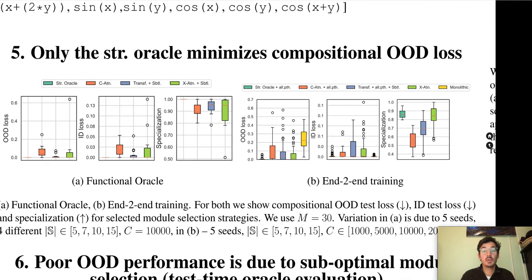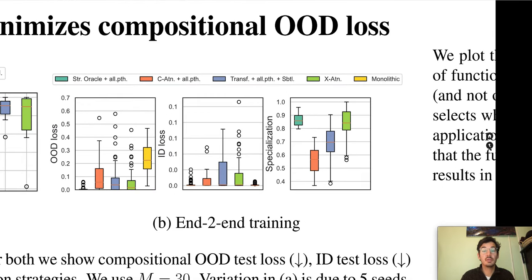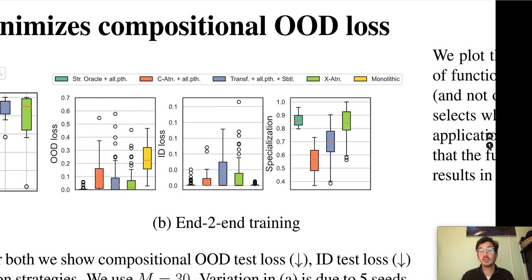Briefly, in our experiments we find that modular solutions reliably outperform the monolithic model in terms of OOD loss — shown in the left plot. We find that the structural oracle is the only baseline that can reliably achieve good systematic generalization as measured by this OOD loss. The structural oracle is a baseline in which the learner has access to privileged information about which variable is relevant for module selection at each layer. The OOD loss here is used as a proxy for systematic generalization ability of the models.